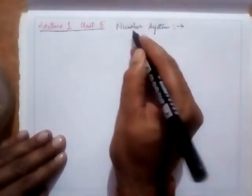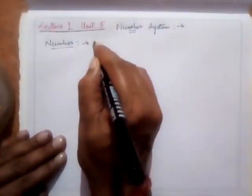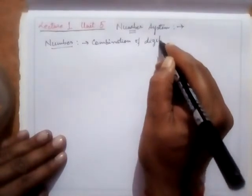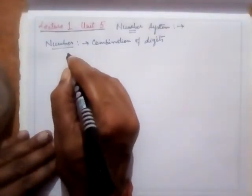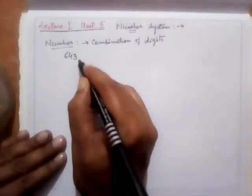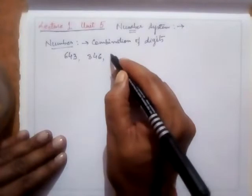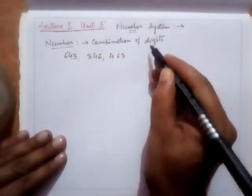Now what do you mean by a number system? Let's define a number. A number is simply a meaningful combination of digits. Suppose I write 643 — you'll immediately say it is 643. Now if I write 346, that is 346, or 463, that is 463. So I've used three digits — 3, 4, and 6 — and if I arrange them in a different fashion, the value of the number changes.